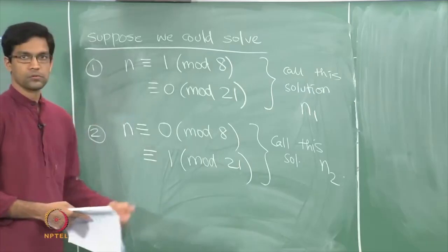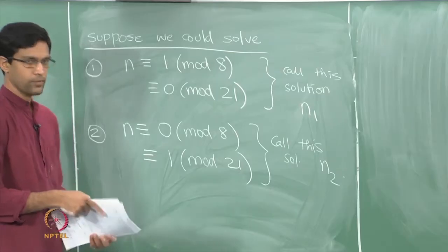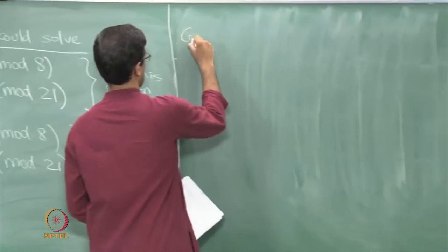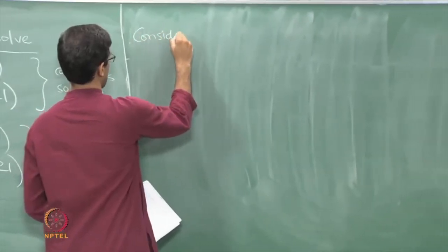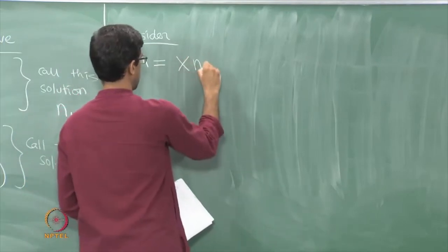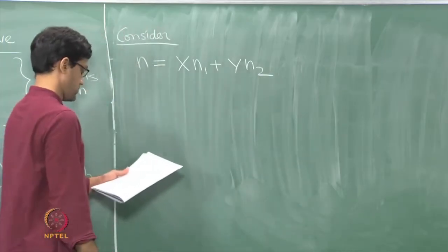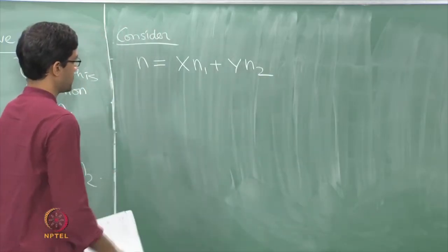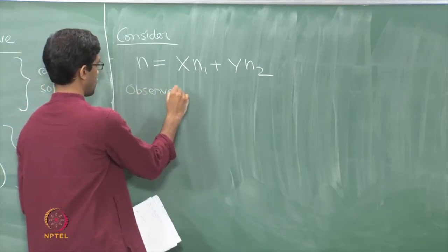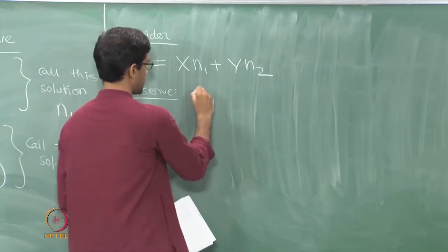So suppose we could solve these two problems — then the general problem is very easy to solve. Consider the following choice of n: x times n1 plus y times n2. Define n to be this and observe what you get when you look at the remainder of n — what is n congruent to mod 8? That is really the question.